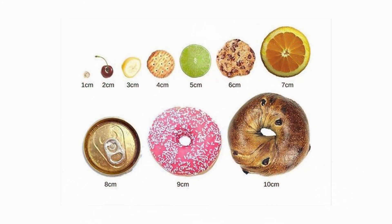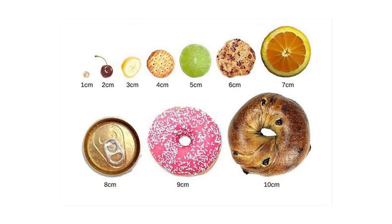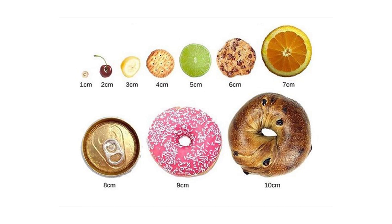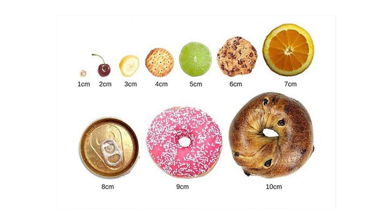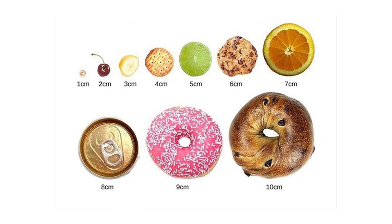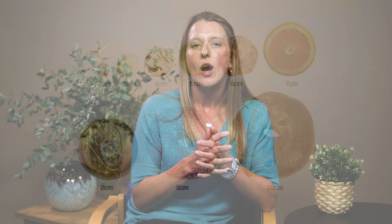Once you reach three centimeters there's a much more predictable pattern, and the end goal is for the cervix to open to ten centimeters. Going from three to ten centimeters is a bit variable but tends to be more predictable than the early phase of labor.